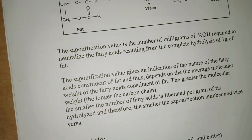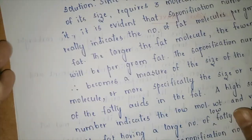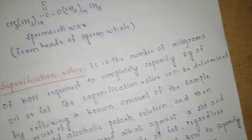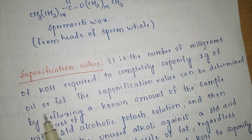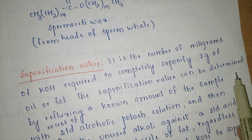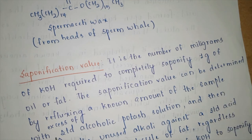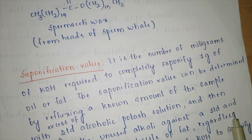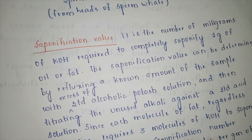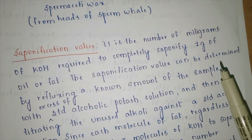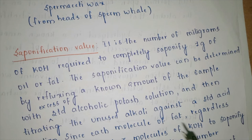The saponification value is the number of milligrams of KOH required to completely saponify 1 gram of oil or fat. It is determined by refluxing a known amount of the sample with excess standard alcoholic KOH solution, then titrating the unused alkali against a standard acid solution. We add excess alcoholic KOH to the fat system, and whatever excess alkali remains is titrated against acid.